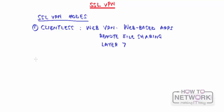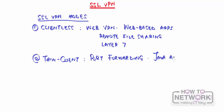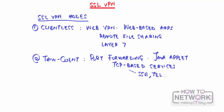The second mode is Thin Client, also known as port forwarding. The thin client is delivered via a Java applet - it's a very small client that provides remote access for TCP-based services. TCP-based services include things like SSH, Telnet, POP3, and other email protocols. Thin client essentially extends Layer 7 to give you TCP-based services.